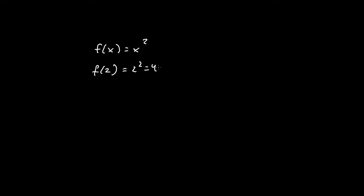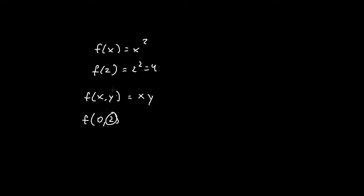In functions with several variables, we have something like f of x, y — so two inputs instead of just x. Let's say f of x, y equals x times y. In this case, you have to plug in something for both x and y. For example, evaluating f of 0, 2, we plug in 0 for x and 2 for y, giving us 0 times 2, or 0.